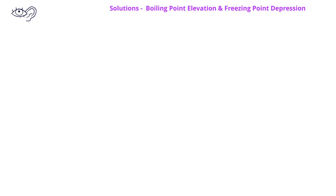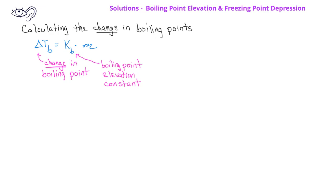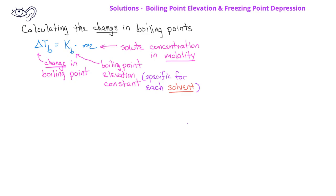It is possible to calculate how much the boiling point will change in a solution compared to the pure solvent. This is given by the equation delta T equals K subscript b times molality. The delta T is the change in the boiling point, K sub b is the boiling point elevation constant, and the script m is the molality of the solute in a solution. The boiling point elevation constant will be a specific constant for any given solvent.